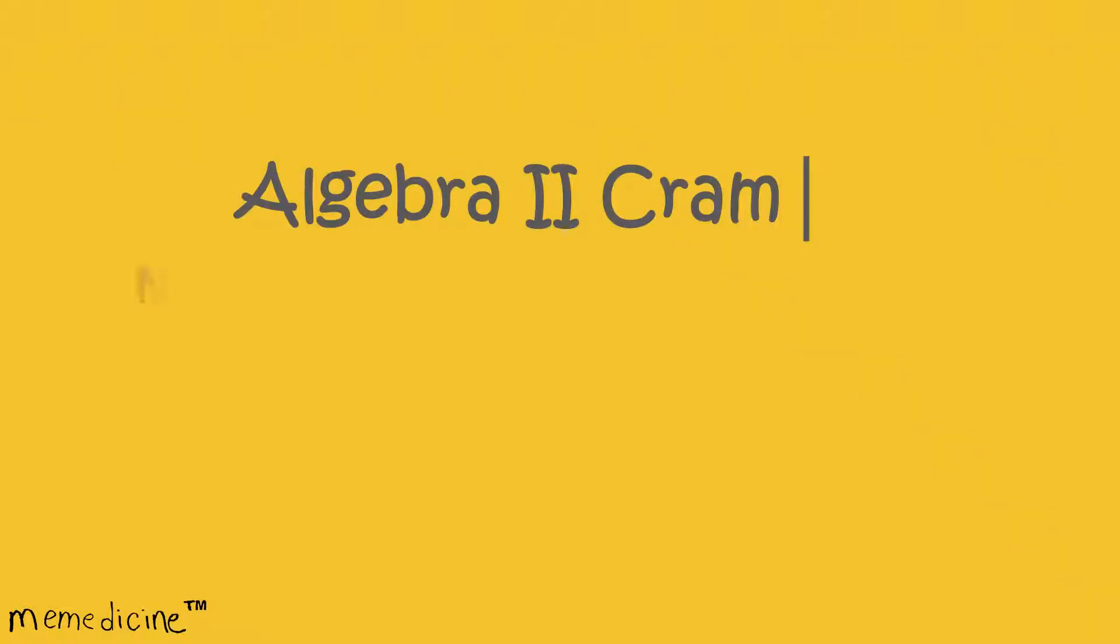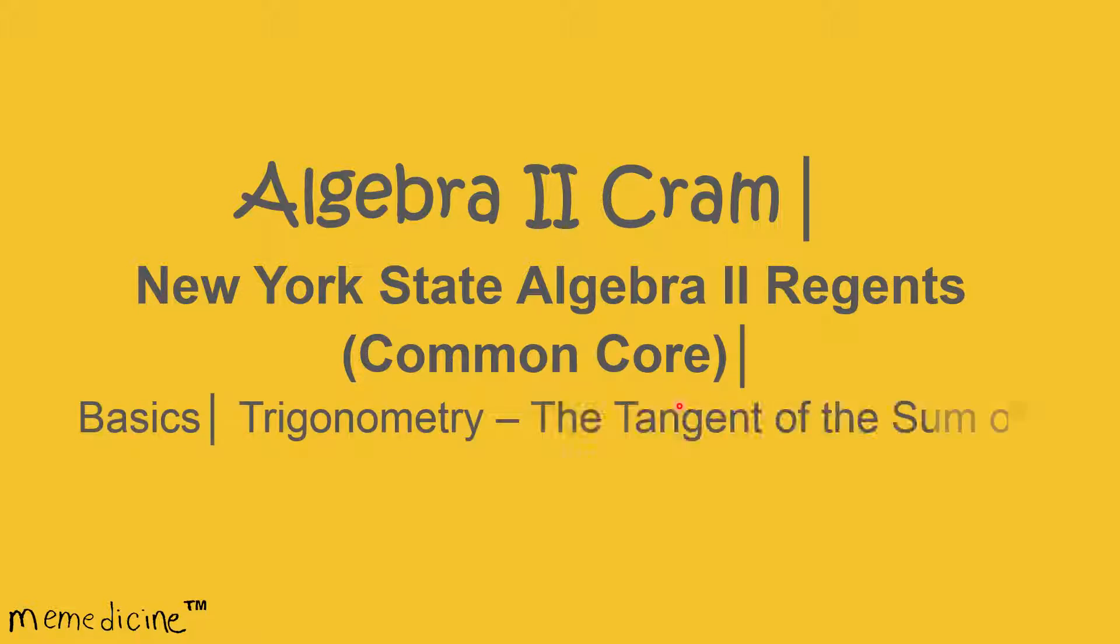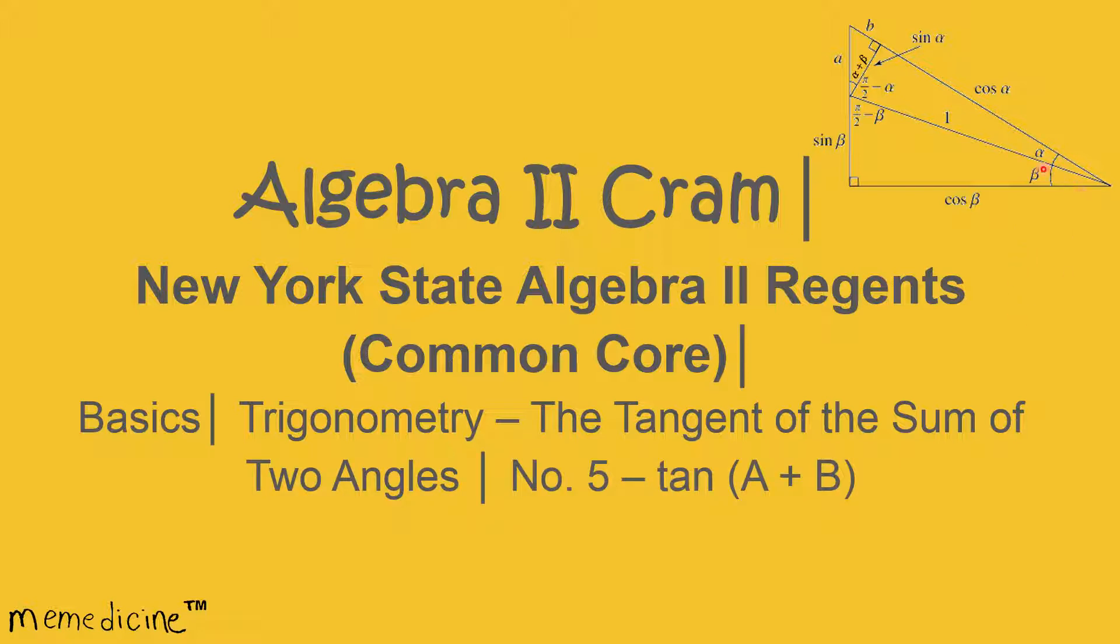Algebra 2 Cram. New York State Algebra 2 Regents. Common Core. Basics. Trigonometry. The tangent of the sum of two angles. Number 5. The tangent of A plus B.